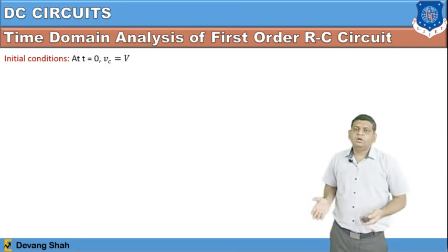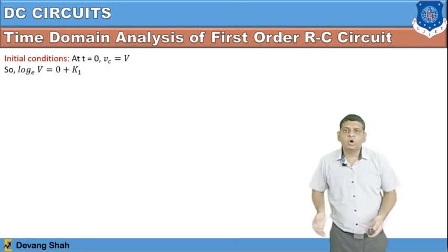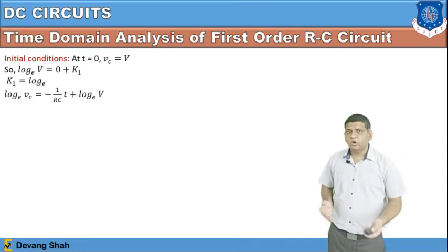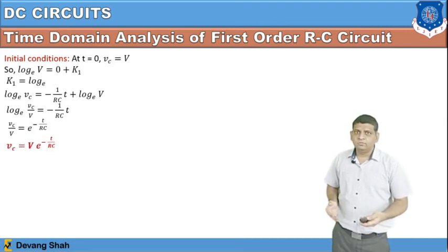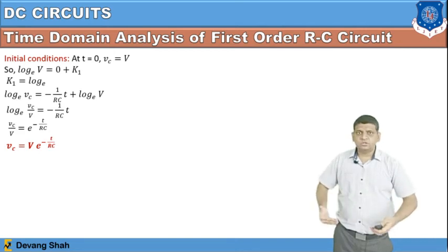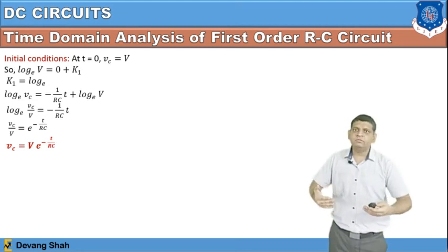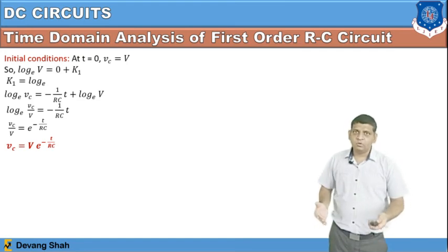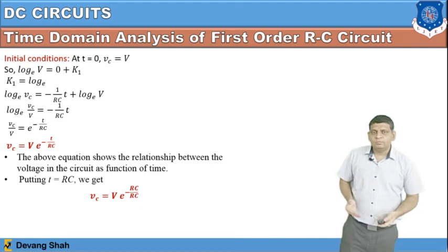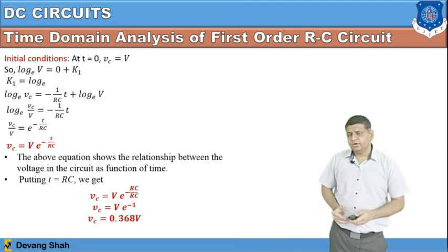At the initial condition when T equals zero and the capacitor starts discharging, the voltage across the capacitor is V. So K1 equals ln(V). Substituting back into the main equation: ln(Vc) equals minus (1/RC)·T plus ln(V). Taking the exponential of both sides: Vc/V equals e^(minus T/RC), giving the discharging voltage equation Vc equals V·e^(minus T/RC). When T equals RC, Vc equals V·e^(minus 1) equals 0.368·V.